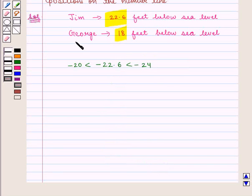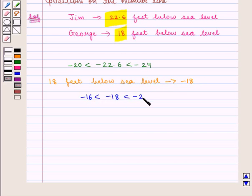And now, we plot the diving point of George that is 18 feet below sea level. Now, 18 feet below sea level means we have to plot minus 18 which is exactly in between minus 16 and minus 20.